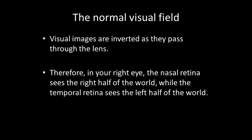Another thing to be mindful of is that visual images are inverted — flipped upside down and back to front — as they pass through the lens of the eye. Therefore, in your right eye, the nasal retina sees the right half of the world while the temporal retina sees the left half of the world.